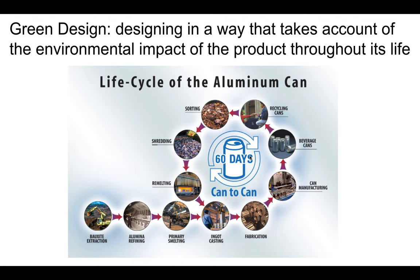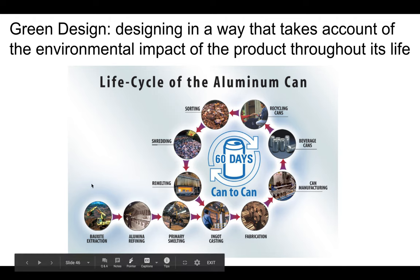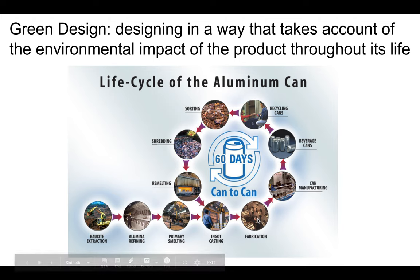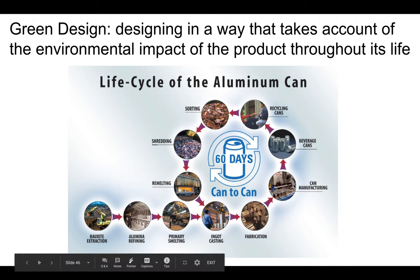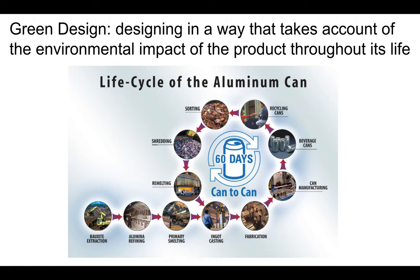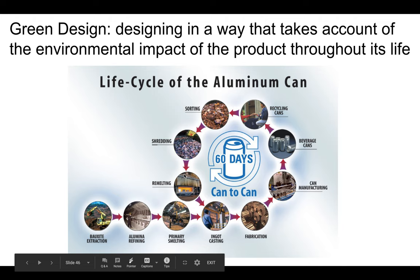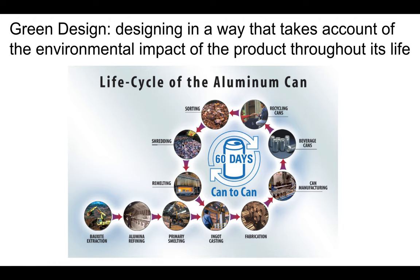Here's the life cycle of an aluminum can. It starts with extracting a non-renewable resource — bauxite, a mineral that contains a lot of aluminum. Then you refine it, smelt it, cast it into ingots, fabricate it into sheets, manufacture the can, recycle the can, sort them, shred them, remelt them, and introduce it back in. But quite often cans don't get recycled.